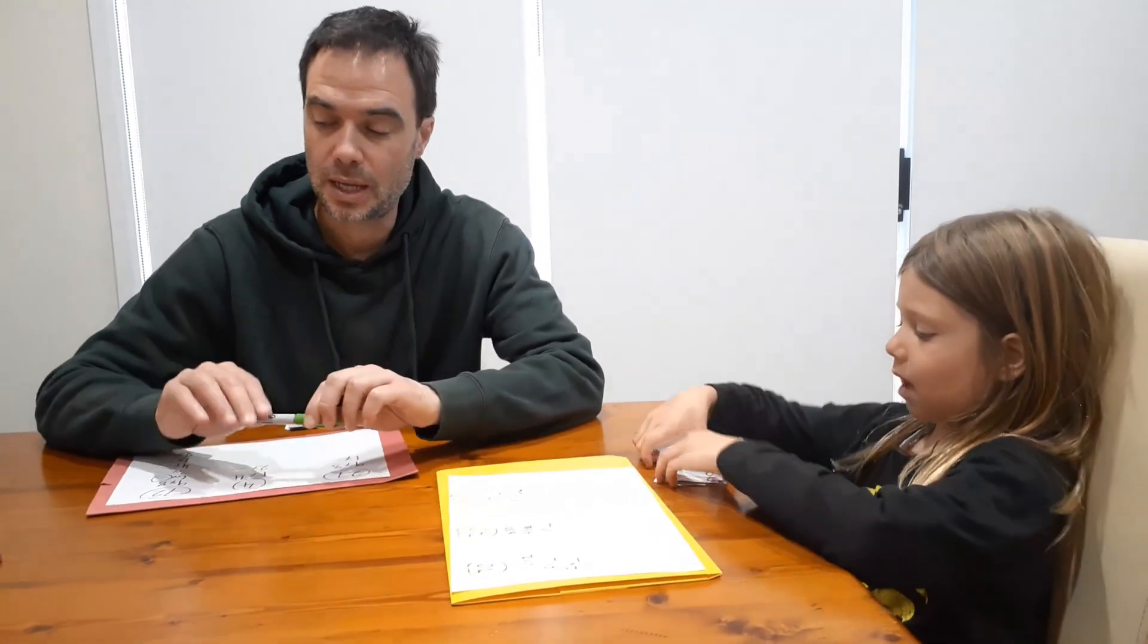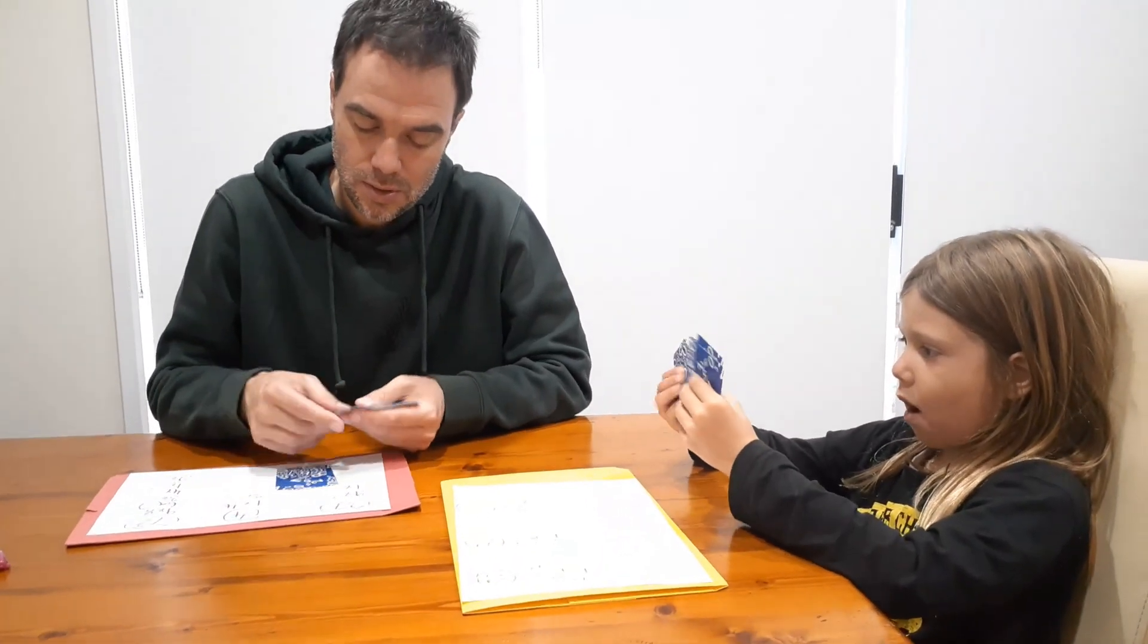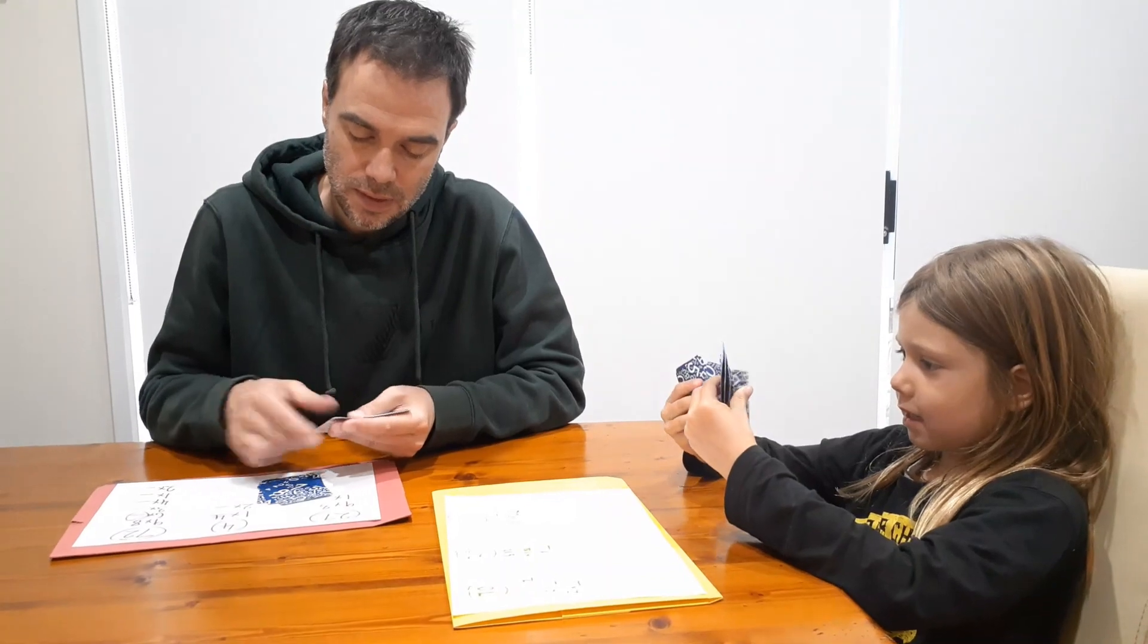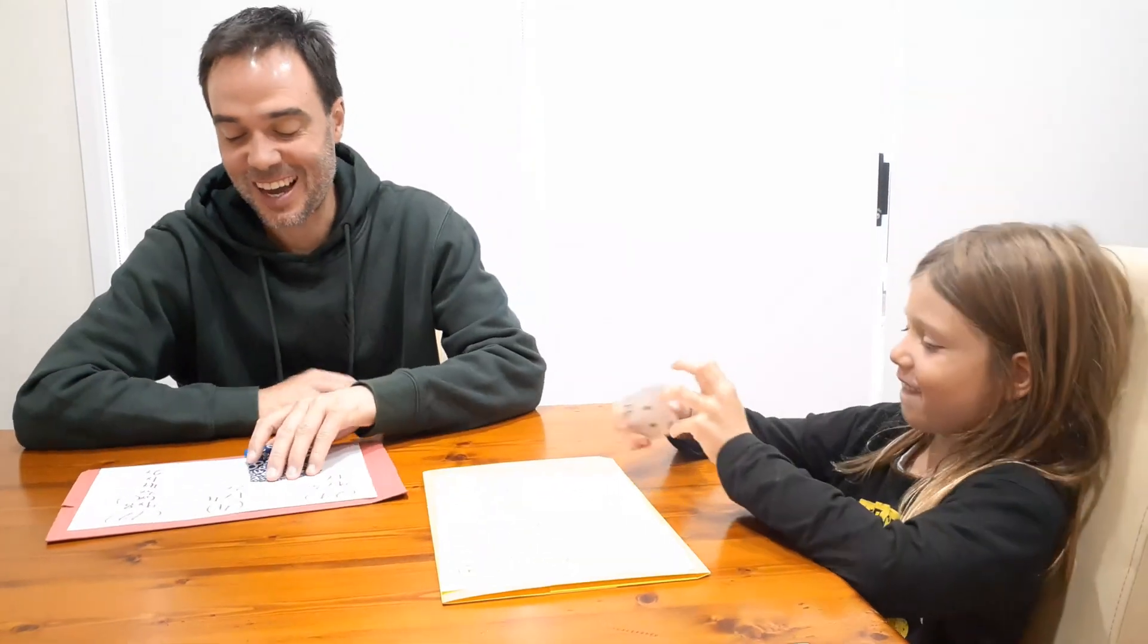So now Nasha how do we work out the winner? You count your cards and whichever person has the less amount of cards you win. Let's do that. Twelve. Twelve. So it's a draw. Okay.